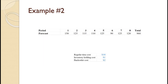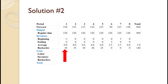For this next example, we will make one minor change to example number 1. We will swap the demand of 90 in period 1 and the 150 in period 6. Since total demand remains 960, level production will remain 120 per period. The costs will remain the same. For period 1, production of 120 and demand of 150 leaves 0 in inventory and back orders of 30. Average inventory is 0.